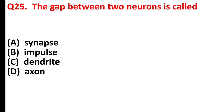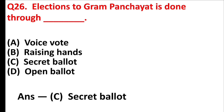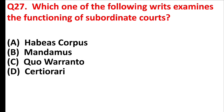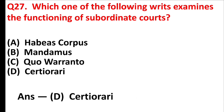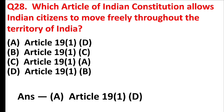The gap between two neurons is called Answer is Option A: Synapse. Elections for gram panchayat are done through Answer is Option C: Secret ballot. Which one of the following reads examines the functioning of subordinate courts? Answer is Option D: Statutory. Which article of the Indian constitution allows Indian citizens to move freely throughout the territory of India? Answer is Option A: Article 19(1)(d).